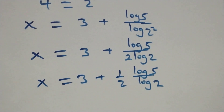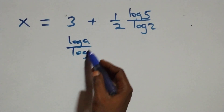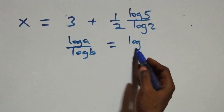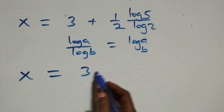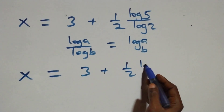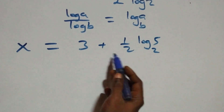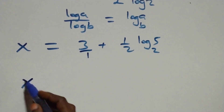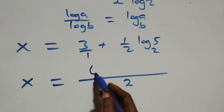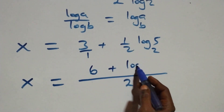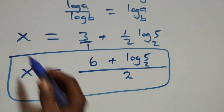We apply the change of base rule: log a over log b equals log a to base b. So x equals 3 plus one half times log 5 to base 2. Combining as one fraction with 3 over 1, we get x equals 6 plus log base 2 of 5, all over 2.